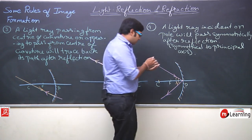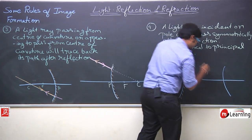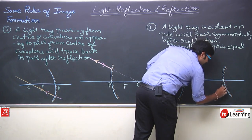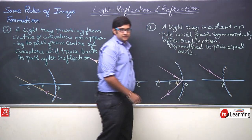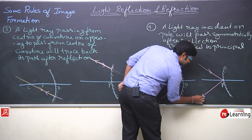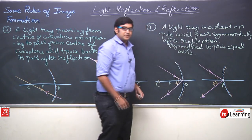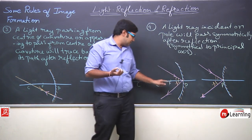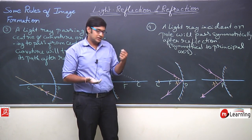For a convex mirror as well, a light ray incident on the pole will reflect symmetrically about the principal axis. The angle of incidence equals the angle of reflection because the principal axis acts as the normal at the pole — since radius is always perpendicular to the surface. So these are the four rules of image formation by spherical mirrors.